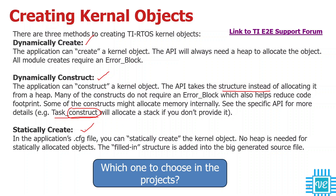The third method is static creation. TI RTOS provides a configuration file called .cfg, and with it you can create tasks, semaphores, software interrupts, hardware interrupts, timers, clocks — all the features provided by TI RTOS — using JavaScript code or the GUI interface. Once you create an object with static creation, you cannot delete it. That flexibility is not available with static creation.